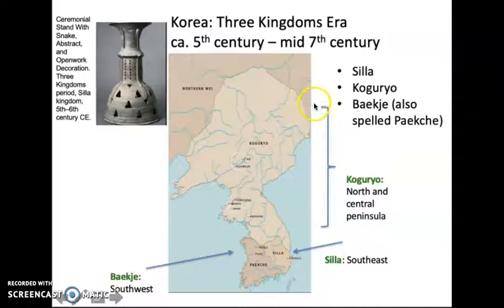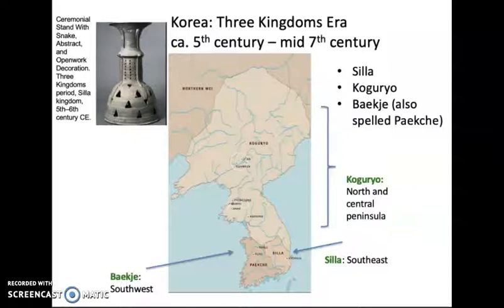This map helps you to see how we have the Koguryo kingdom in the north and central peninsula, then Shila, and then Pakche — which can also be spelled Pakche — because these transliterations are never 100% accurate, given different language systems and different phonetic patterns.